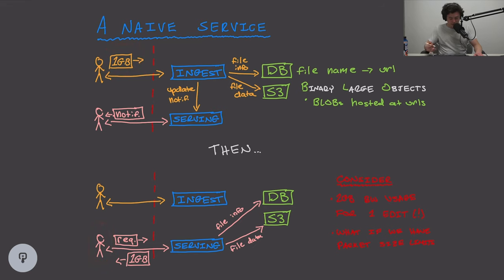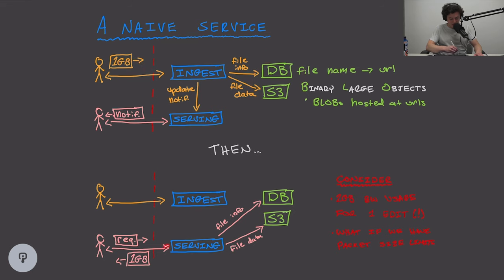The serving service looks up the file data in our metadata database to check if the file name exists. If it exists, it uses the URL to download the data from S3. It then sends that binary large object — the one gigabyte file — to the ping client. The ping client now has the one gigabyte file the gold user uploaded. This implementation works: files can be uploaded, stored in the cloud, and downloaded.